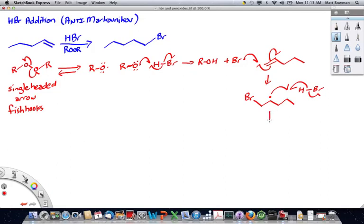generating the product plus a bromine radical. The bromine radical can then go and repeat the process of adding to another alkene.